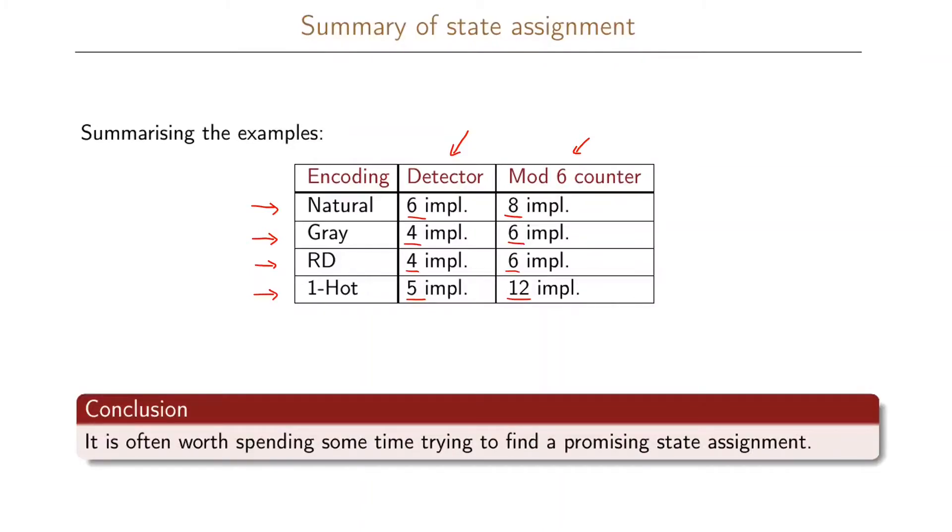If we summarize our findings here, the conclusion that we can draw is that it is often worth spending some time trying to find a promising state assignment because it does have quite a great impact on the number of implicants that you have in the end.